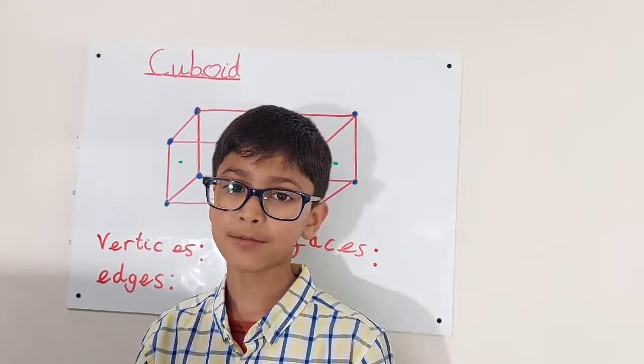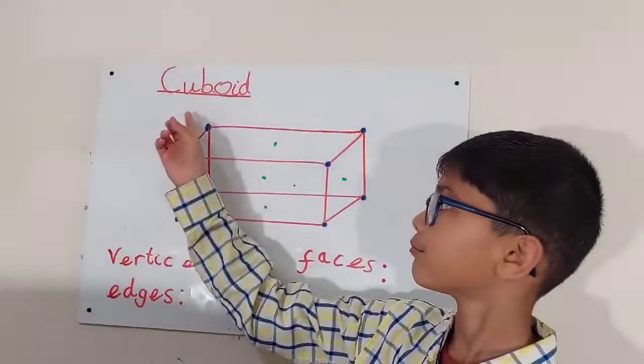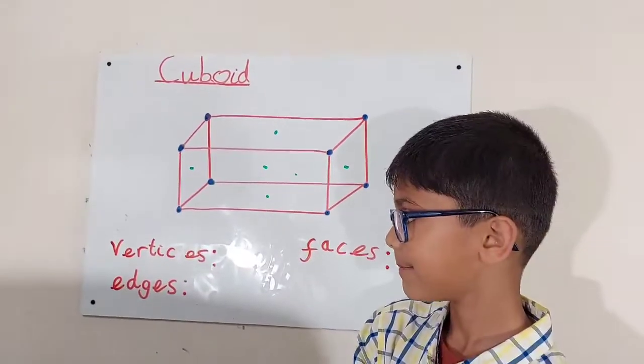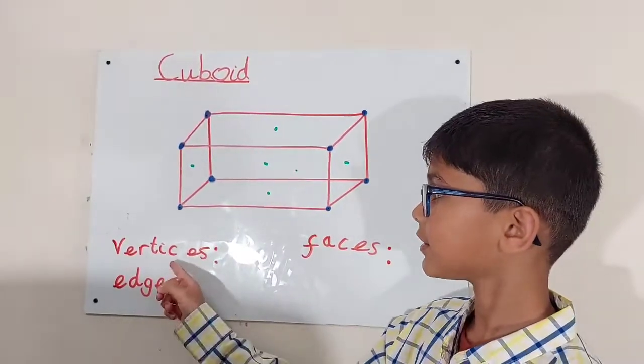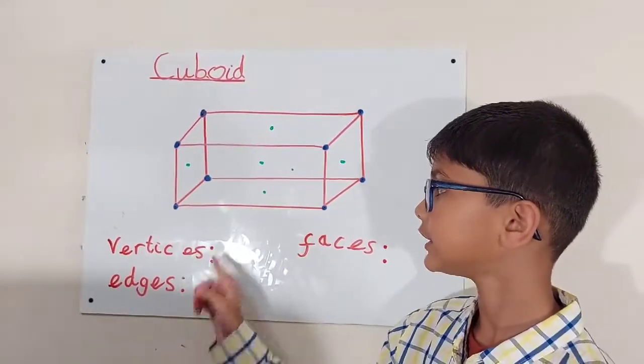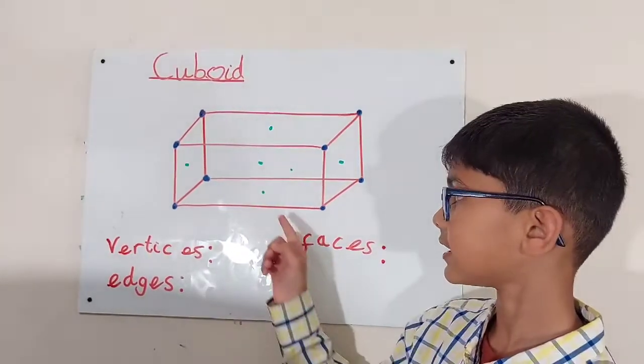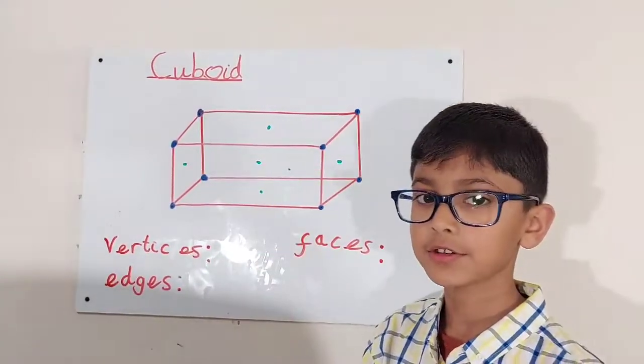Hello everybody, my name is Efnaveed and today we're doing properties of a cuboid. The vertices are highlighted in blue, edges in red, faces, they've got a green dot.